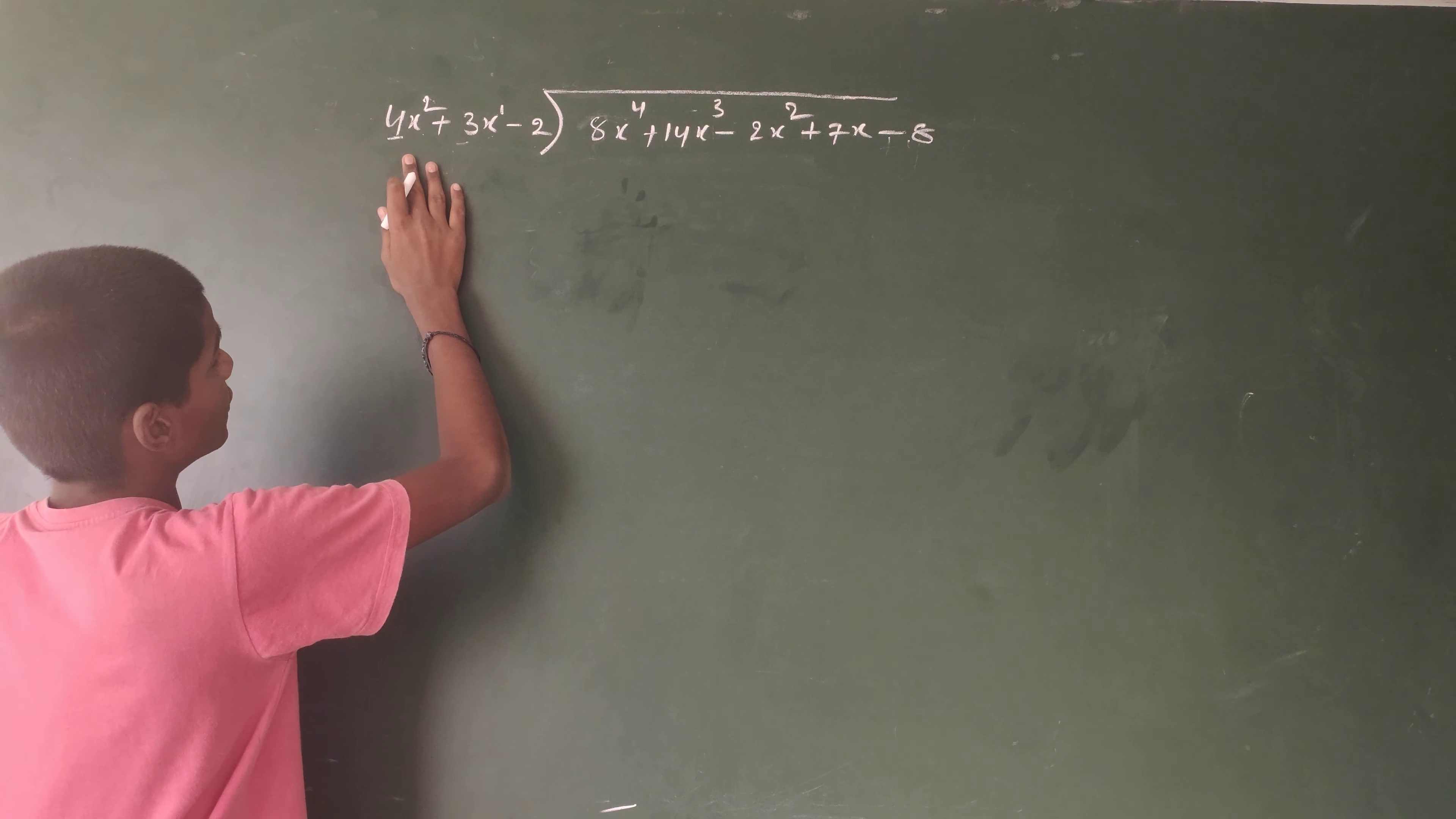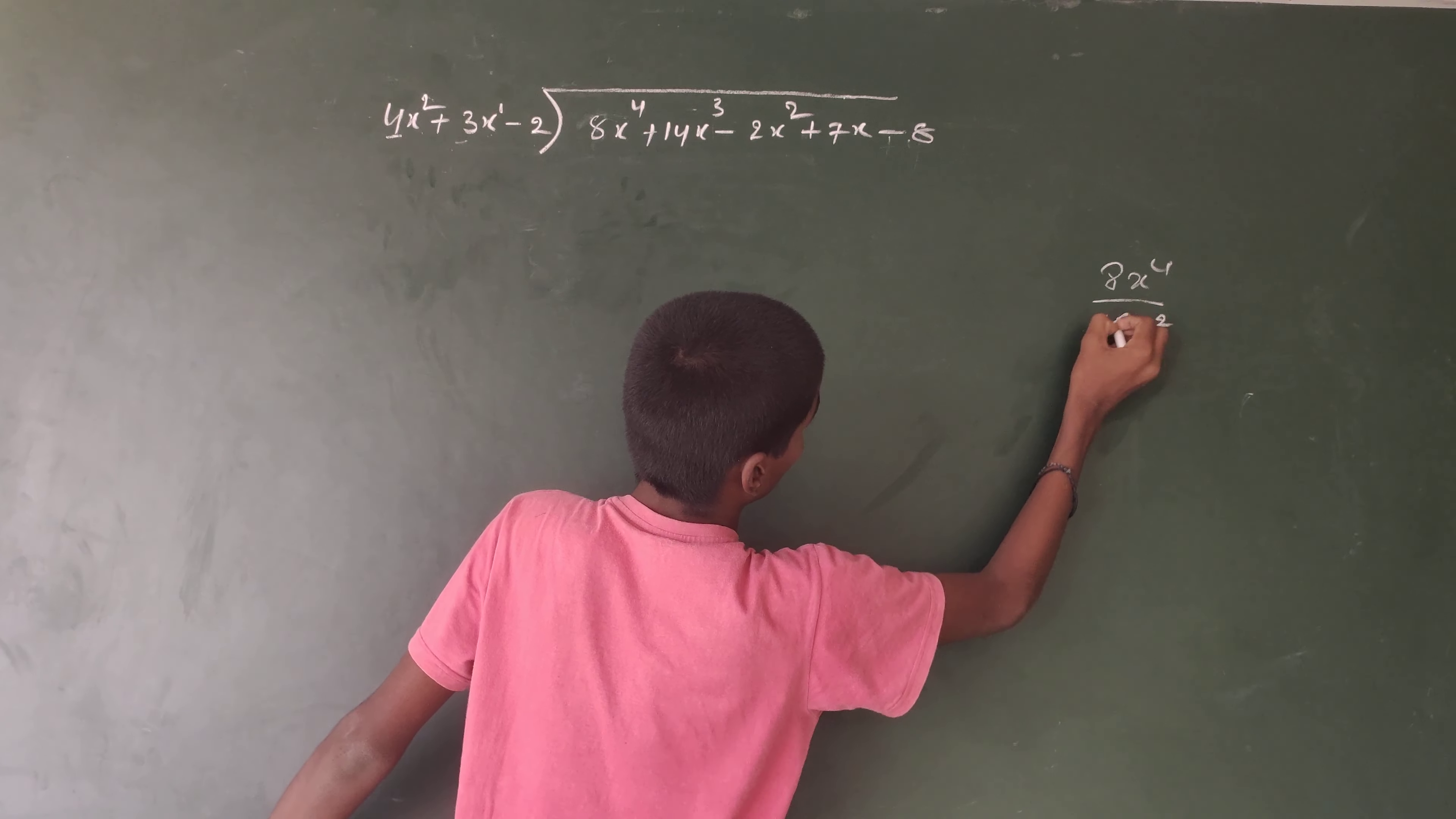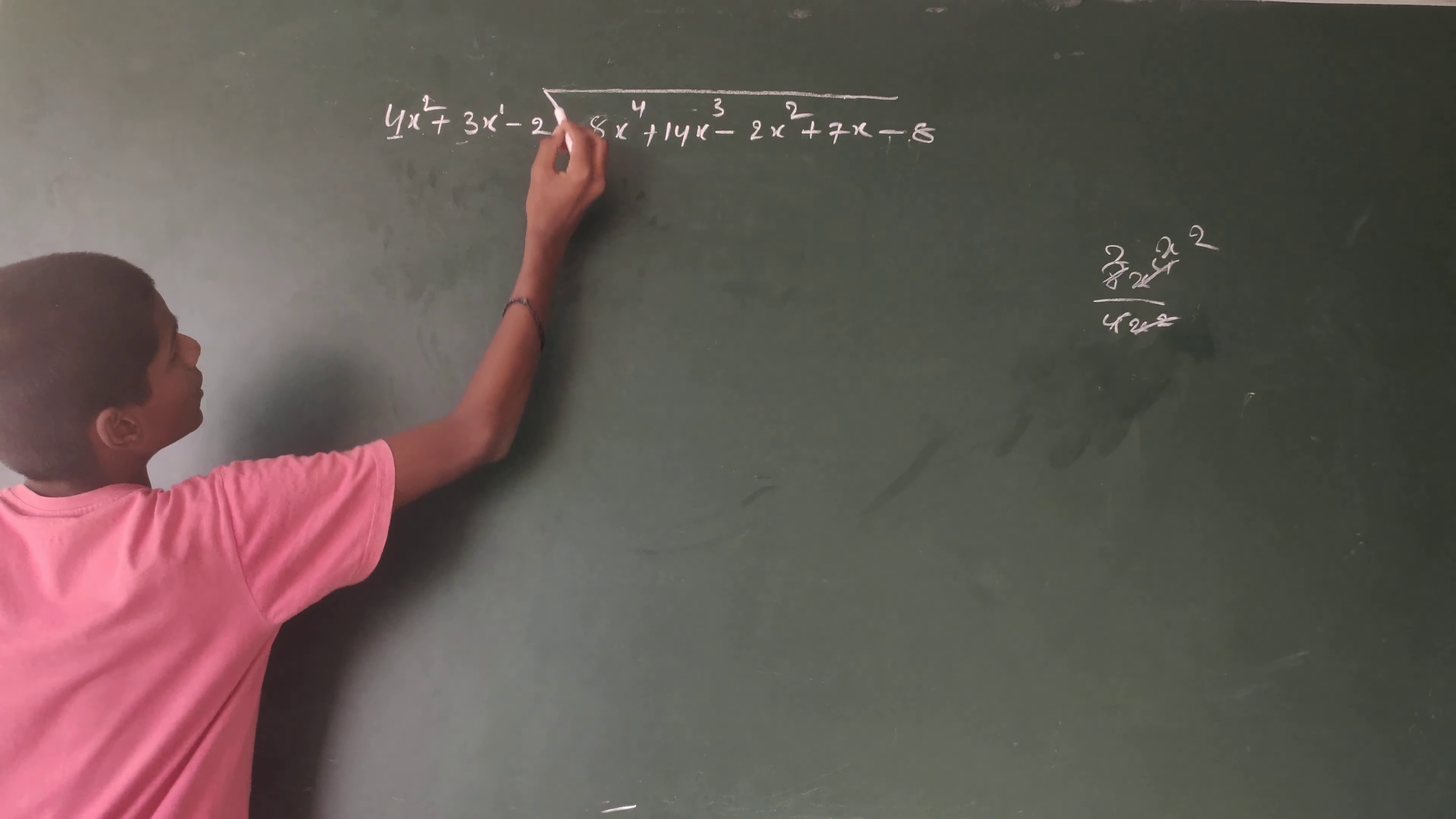Dividend's first term divided by divisor's first term. 8x⁴ divided by 4x². 4 and 8 is 2 times, x⁴ and x² is x² times. So 2x².